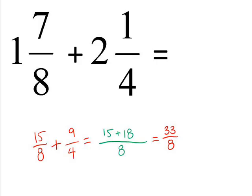We can simplify this a little bit further now. 33 divided by 8 gives us 4 with 1 left over, so we put that as 1 over 8.